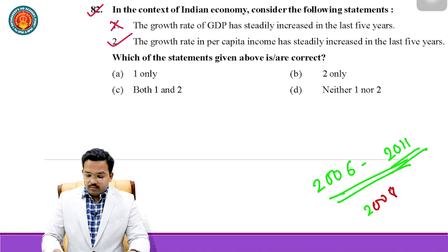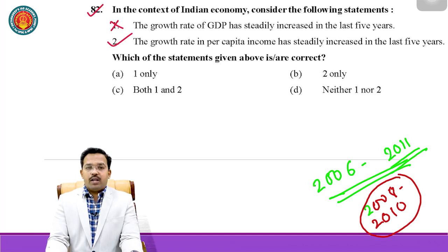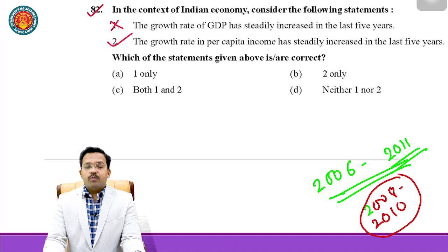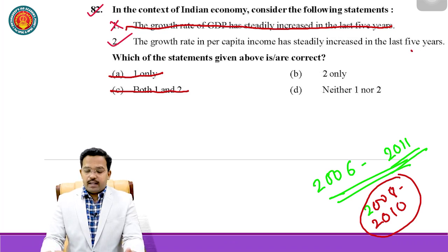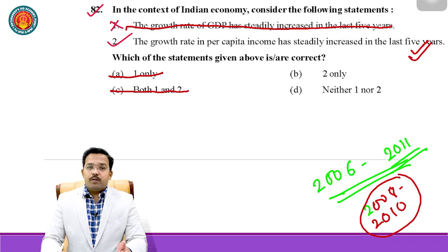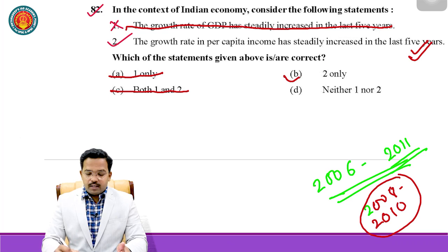In the context of the European economy, the purchasing power economy was the least affected. But Indian economy had to suffer due to two important global economic crises. The growth rate is not continuously increased, so the first statement is wrong — that takes us to option C. The growth rate in per capita income has steadily increased in the last five years — this is correct. It is a statement from the Indian Economic Survey, that despite suffering from two global economic crises, the Indian economy was doing extremely well. So the correct answer is two only.